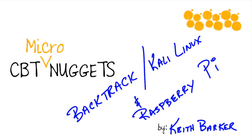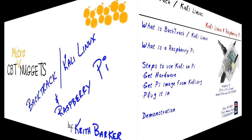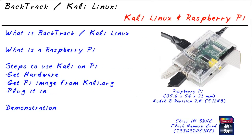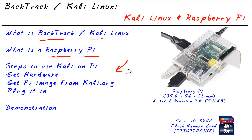Backtrack, Kali Linux, and a Raspberry Pi — it could be a match made in heaven. Our objectives for you and I in this micronugget are really simple: to be able to describe what Backtrack or Kali Linux is, what a Raspberry Pi is, and how we actually integrate the two together and why we would want to.